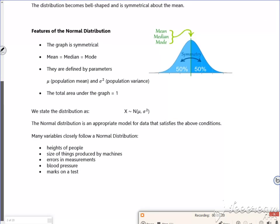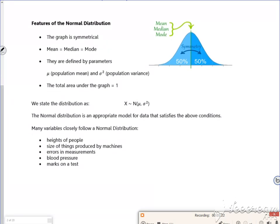Now what's important is that the graph is symmetrical. So binomial wouldn't be symmetrical, or would only be symmetrical if p was a half. This is symmetrical, so the mean, the mode, and the median all match up in the middle. The parameters are μ which is a population mean and σ² which is your population variance.